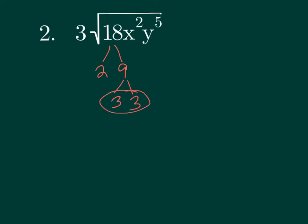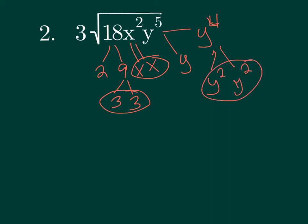X squared, we know, is X and X. So that's a pair. Now, Y to the 5th, I'm going to break that down. Y to the 5th is Y times Y to the 4th. Notice what I did. I just took one out and made it Y to the 4th. Well, Y to the 4th, we can break down. Y to the 4th is Y squared and Y squared. And there's a pair.